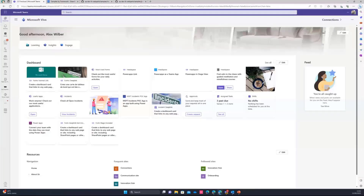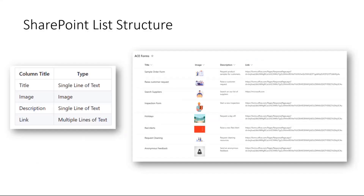Let me share my slides back again, just to show you how the structure of this custom ACE card works. So basically it's just a SharePoint list and we have only four columns: a title, an image, a description, and a link.